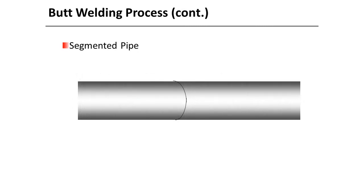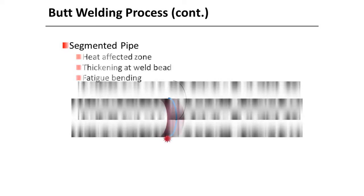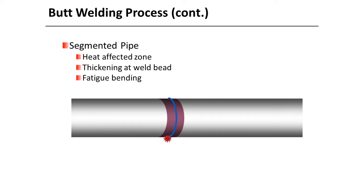The butt weld process involves butting up with proper heat sinks installed and spacing of chill blocks. This graphic shows the heat affected zone and the thickening at the weld bead. The external weld bead is removed, but there is an internal weld bead remaining.